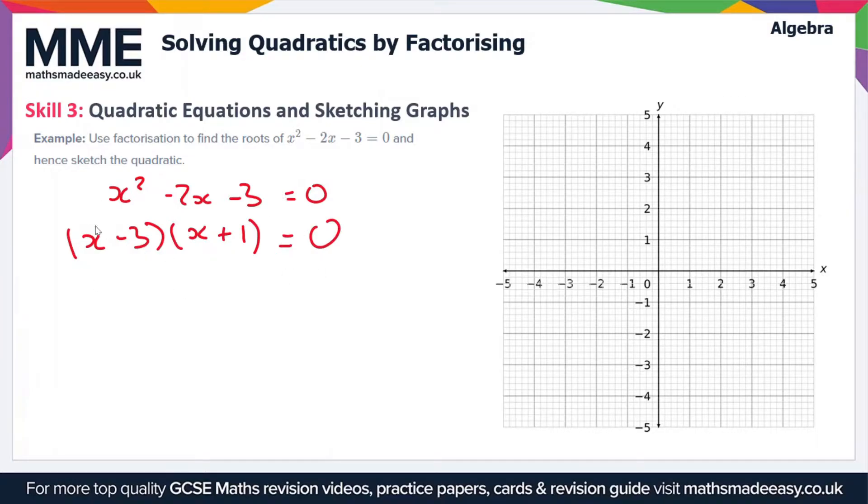So using what we've learnt in the first couple of videos, as I say you should watch those first if you haven't already, this is going to give us two expressions for x. So for this to equal 0, at least one of these brackets has to equal 0.